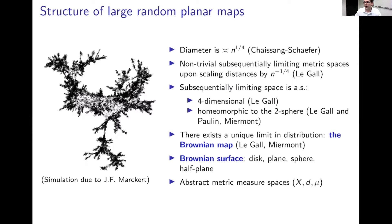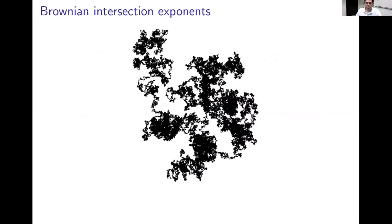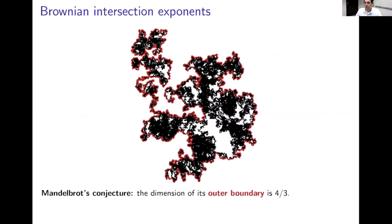That's what the Brownian map is — you can think of it in some sense as the uniform measure on surfaces homeomorphic to the sphere. Before jumping into Liouville quantum gravity, let me tell you a little about the story of why one is actually interested in these objects. Let me go back to planar Brownian motion. There was a very famous conjecture about planar Brownian motion due to Mandelbrot: he conjectured that the dimension of the outer boundary — the red curve — is equal to four thirds.